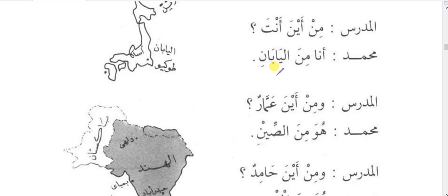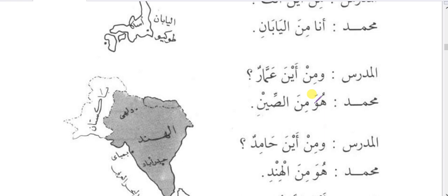Min aina anta — where are you from? Anta means 'you.' Conversation example: al-mudarrisu asks Muhammad — min aina anta? Muhammad replies: ana minal yaban — I am from Japan. Yaban means Japan. Al-mudarrisu asks: min aina Ammarun — where is Ammar from? Muhammad says: huwa minas-seen — he is from China. Al-mudarrisu asks: min aina Hamidun — where is Hamid from? Muhammad says: huwa minal-hind — he is from India.